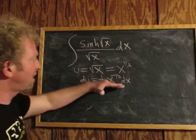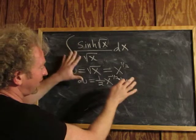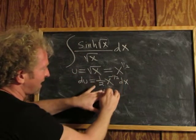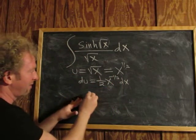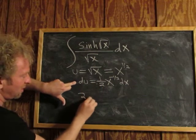The goal is to make this look like this. We're not quite there yet. Maybe we'll start by bringing this guy downstairs, and it'll become x to the one-half. Then we'll put the 2 over here. We can multiply by 2. So multiplying by 2, we get 2 du.